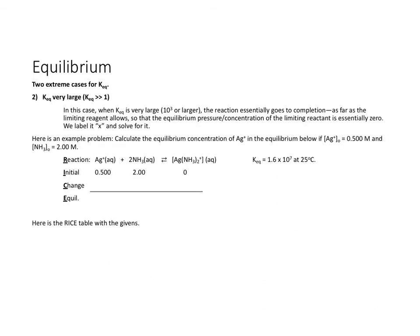Our other extreme case is when KEQ is very, very large, very much greater than 1. How big is that? 10 to the third or greater. So if our equilibrium constant is 1,000 or greater, we're going to make this assumption. The reaction essentially goes to completion, at least as far as the limiting reagent allows. So that the equilibrium pressure or concentration of the limiting reagent is essentially zero. We'll call it x. It's a small number, and it will be our unknown, and we'll solve for it.